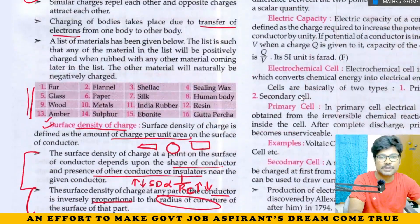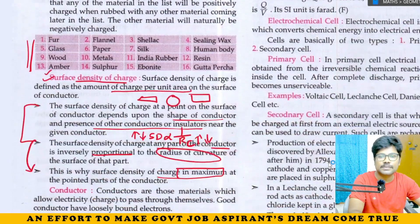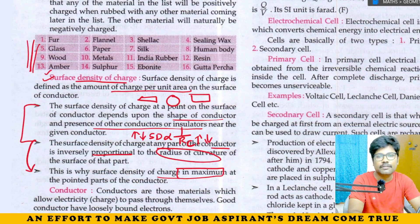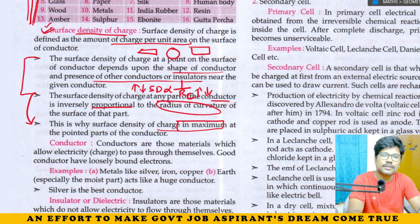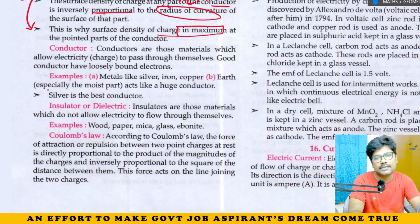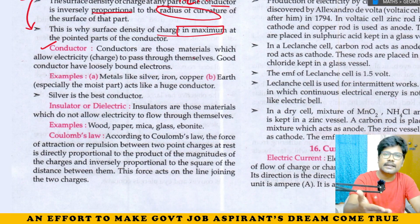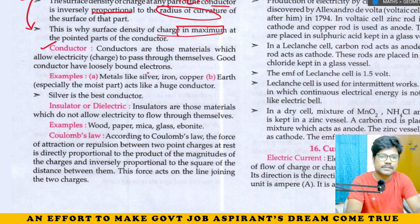Here we have surface density and charging property, and that's the basic unit charge. Conductors are materials which allow electricity to pass through them, because they have free electrons. Examples are silver, iron, copper. When it is wet, it acts like a huge conductor. Mostly metals have free electrons, which is why at room temperature they allow charge and current to pass — that's electricity.